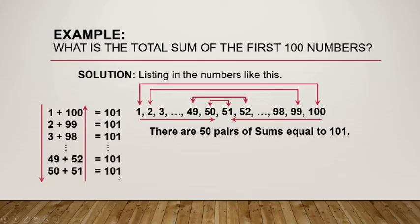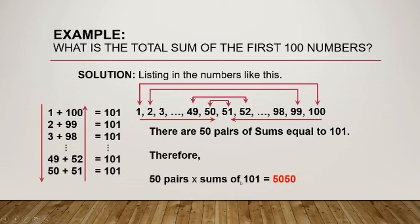So, 101 sila and gano'n tayong 50 pairs. Therefore, 50 times the sum of 101, it is equal to 5050. Or, you can just add all the sums ng mga pairs na yun and it is equal to 5050. We have answered the problem. That is the total sum of the first 100 numbers.